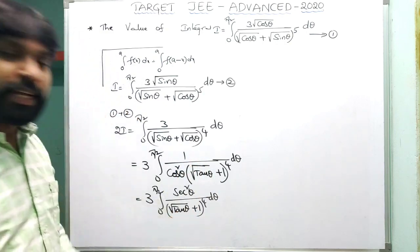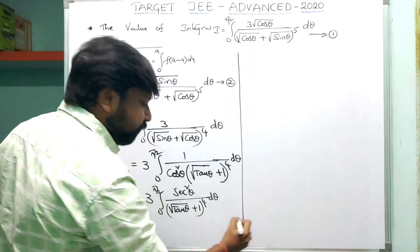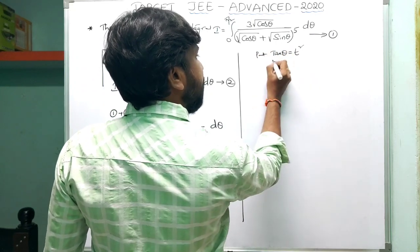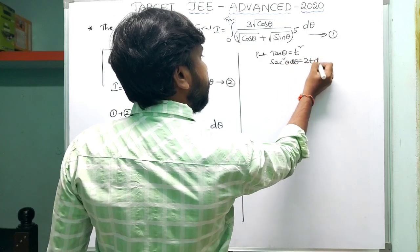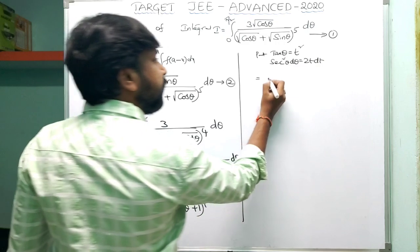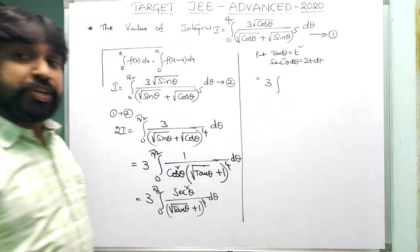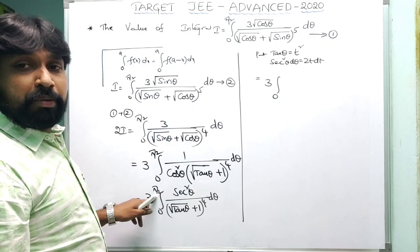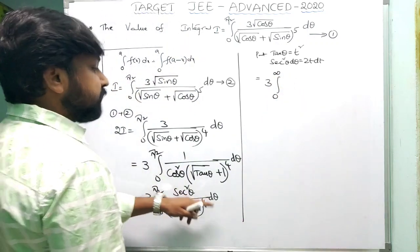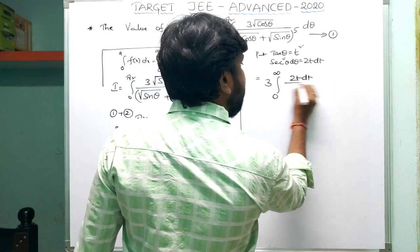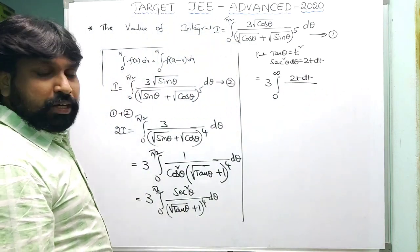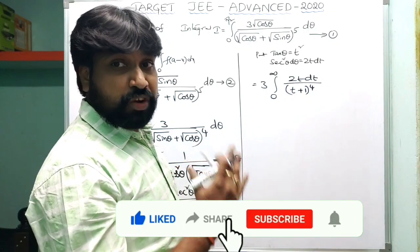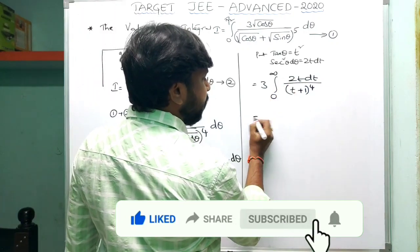Now substitute tanθ = t². Then sec²θ dθ = 2t dt. Change the limits: when θ = 0, tan0 = 0; when θ = π/2, tan(π/2) = ∞. The integral becomes 3 times integral from 0 to ∞ of (2t dt) / (t + 1)⁴. Simplify using partial fractions.